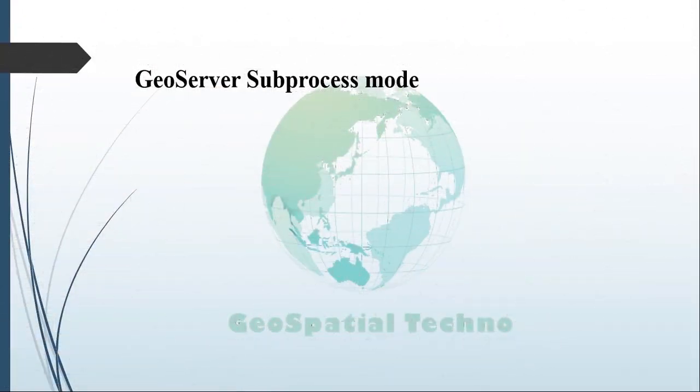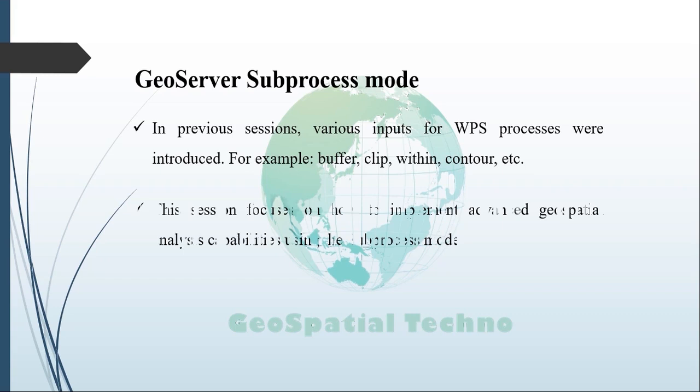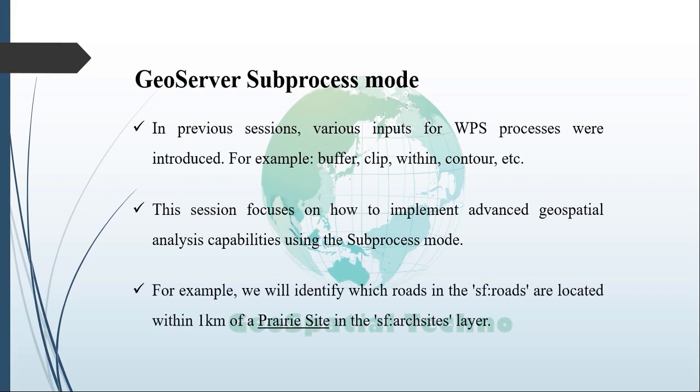Using Subprocess mode in GeoServer. In previous sessions, various inputs for WPS processes were introduced. This session focuses on implementing advanced GeoSpecial Analysis capabilities using Subprocess mode. As an example, we will identify which roads in the SF-CALEN roads layer are located within 1 km of a Priory site in the SF-CALEN arc sites layer. First, download and install GeoServer 2.27.x or later, then add the WPS extension.